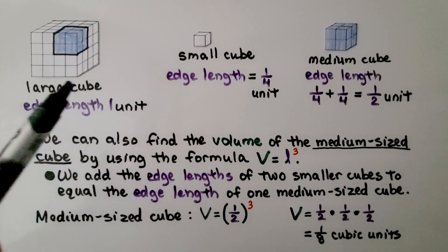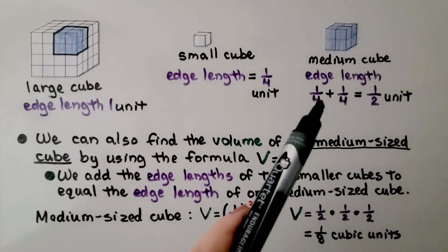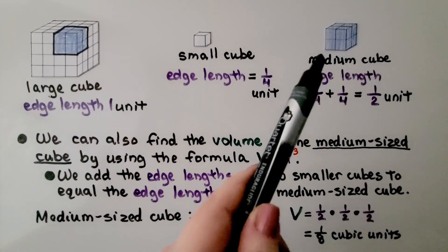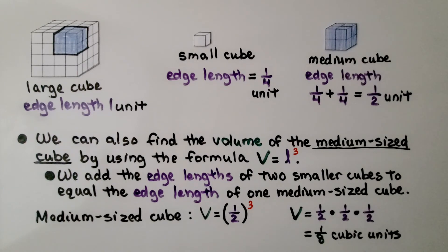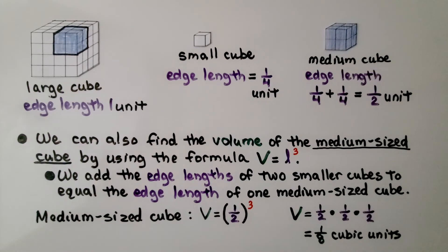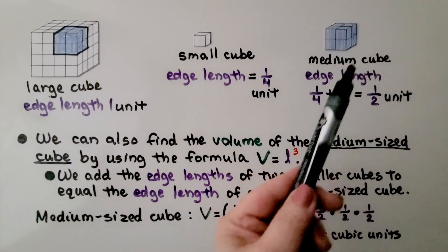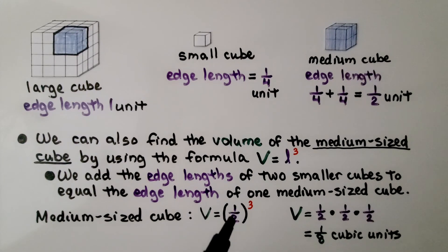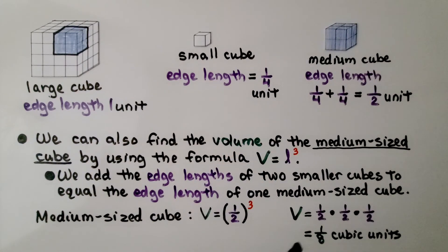The large cube has an edge length of 1 unit, the small cube has an edge length of 1/4, and the medium cube's edge length equals two small cubes: 1/4 plus 1/4 equals 1/2 unit. We can also find the volume of the medium cube using V equals edge length cubed. Volume equals (1/2) cubed — with parentheses so the whole fraction is affected. One-half times 1/2 is 1/4, and 1/4 times 1/2 is 1/8. The medium cube has a volume of 1/8 cubic units.